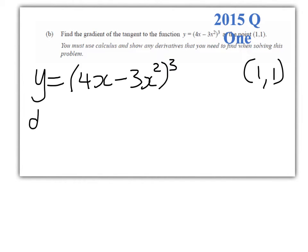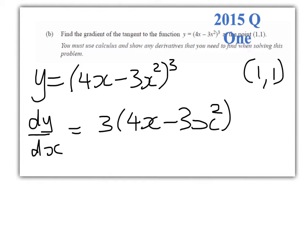So step 1 is to differentiate, and we're going to use the chain rule to do that. So dy/dx equals 3 times (4x - 3x²)² times the derivative of the inside function, which is 4 - 6x. Now I could clean that up if I were doing something elegant with it, but because all I'm asked to do is to find the gradient at the point (1, 1), I now just need to substitute in x equals 1.